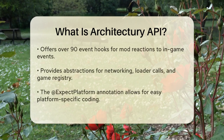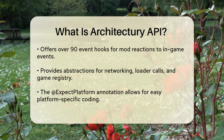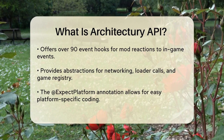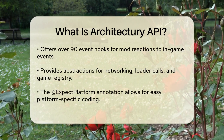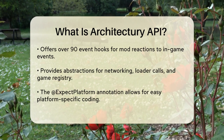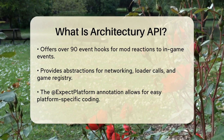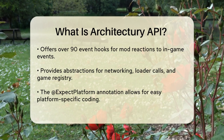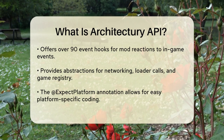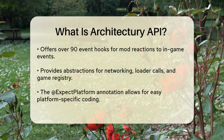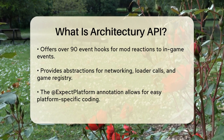One of the key features of the Architecture API is its extensive set of hooks and abstractions. It currently includes over 90 event hooks, which are essentially triggers that allow your mod to react to various events in the game. It also provides networking abstraction, loader calls abstraction, and game registry abstraction. These abstractions help in managing different aspects of the game, such as networking, loading, and registering game elements, in a unified way.